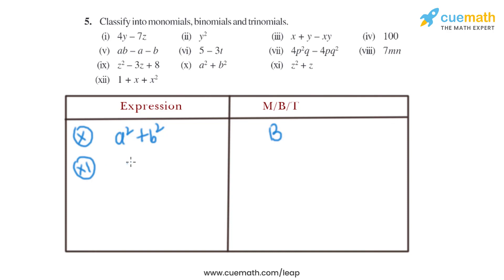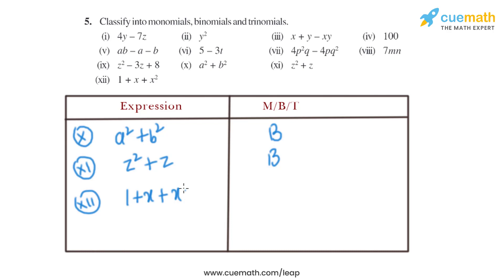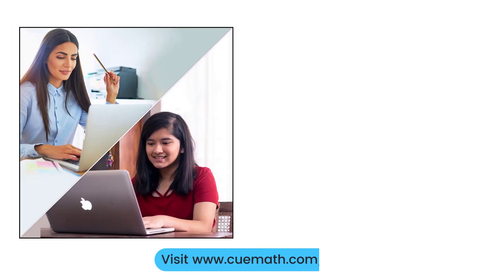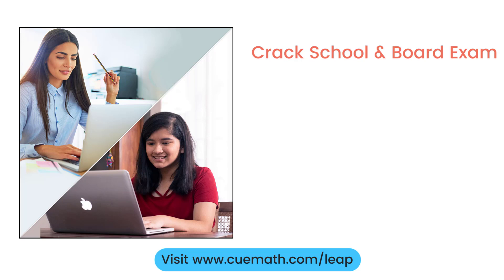In the eleventh part, z square plus z is given. As we can see, there are two terms, z square and z, so that is basically a binomial. The twelfth expression is 1 plus x plus x square. As we can see, there are three different terms: 1, x, and x square, so that is basically a trinomial.